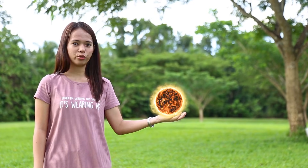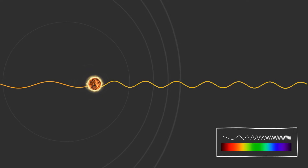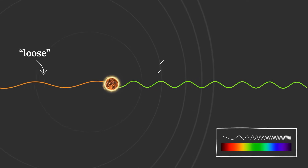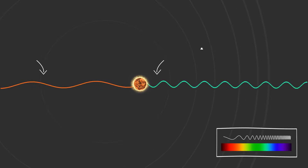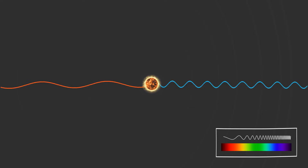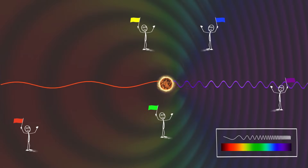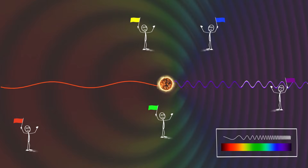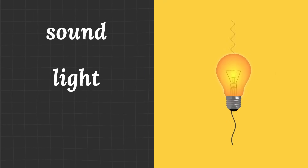Similarly, if I throw this ball close to the speed of light, its light waves would also get loosened and bunched up, making it appear as different colors. With infinitely many observers, the ball would appear to be all colors at the same time, each color relative to one observer. So sound and light are relative.